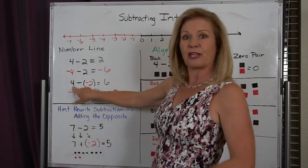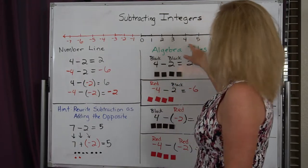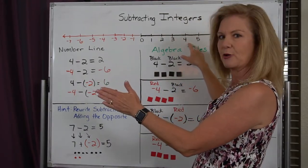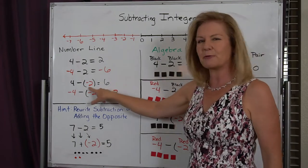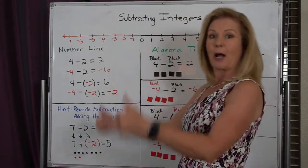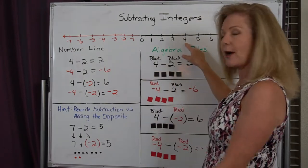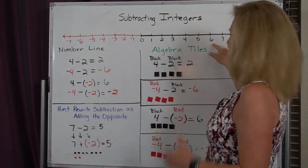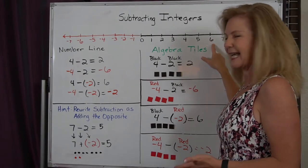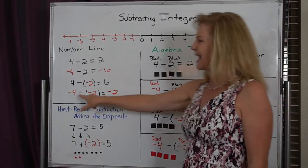Let's take the third one. I'm going to start with positive 4 and face towards the smaller numbers for subtraction, but notice I'm subtracting a negative 2. That means I have to walk backwards on the number line. So I'm at 4, I'm going to walk backwards two places. Therefore, 4 minus negative 2 is 6.